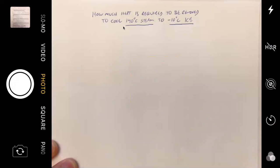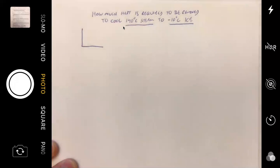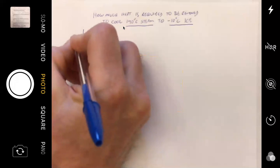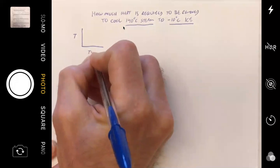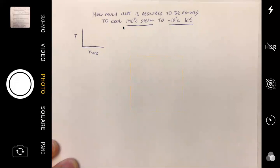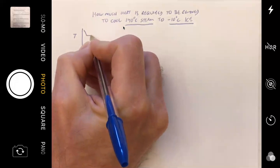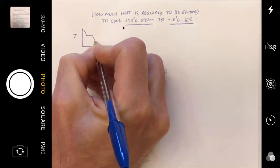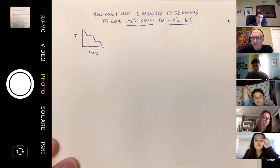How much heat is required to be removed to cool 140 degrees Celsius steam to negative 10 degrees Celsius ice? We are looking at these heating and cooling curves. We've got temperature on the y-axis here, we've got time on the x-axis, and so we're going to be starting out hot and we're going to be cooling it.